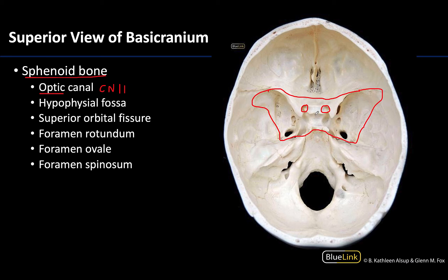Just posterior to that, you'll see this fossa — it's almost like the seat of a saddle. This whole area is called the sella turcica, which means Turkish saddle. That seat of the saddle is the hypophysial fossa, and it is there that you will find the pituitary gland, or the hypophysis, sitting — very well protected in this region.